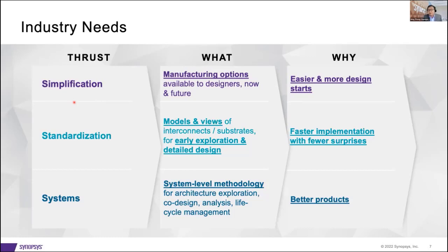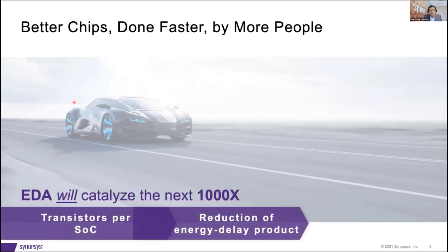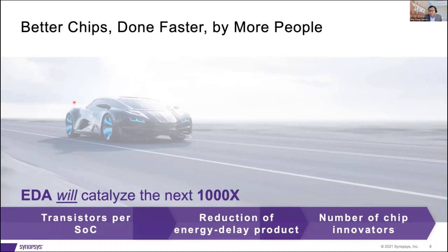I added this slide because there was an interesting discussion yesterday at the NIST roundtable about the role of EDA. I really believe that the future should be better chips done faster by more people. EDA's job is to catalyze the next 1,000x of integration density, better products — in particular, energy delay product reduction — and more people being able to create chips. I actually changed that word from 'should' to 'will' about five minutes before this, because listening to the sessions gave me so much confidence. It's not a matter of should — I think we will catalyze the next 1,000x. I'd like to learn from you and work with you to create that catalyzation. Thank you.